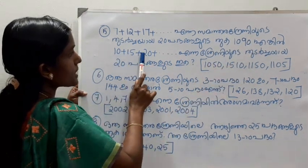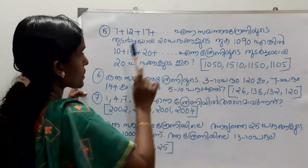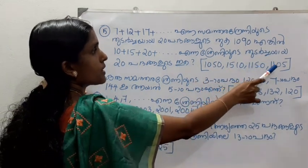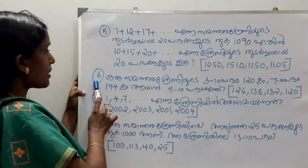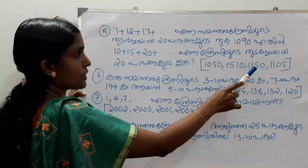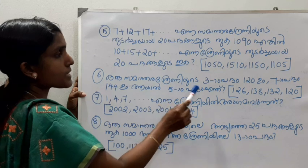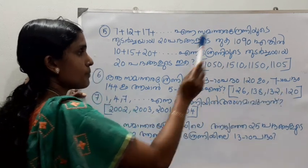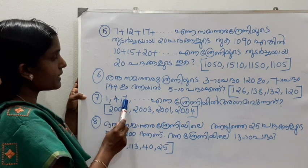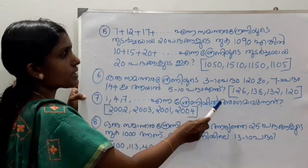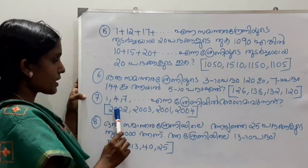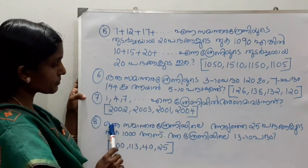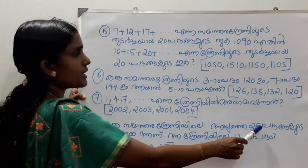10, 15, 20 etc. 2-2, 2-3, 2-1, 2-4. One samadhar shreani (arithmetic sequence) is the same as 25 times.